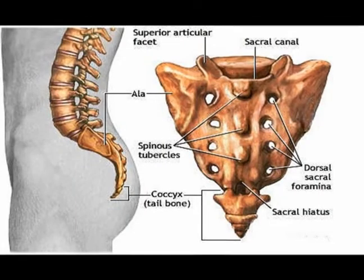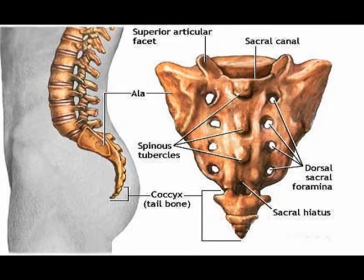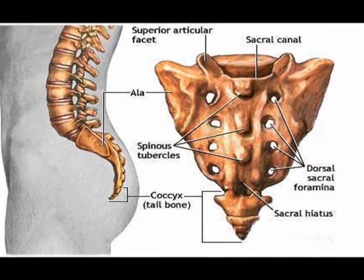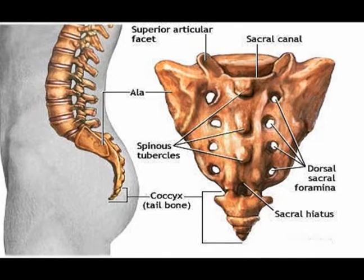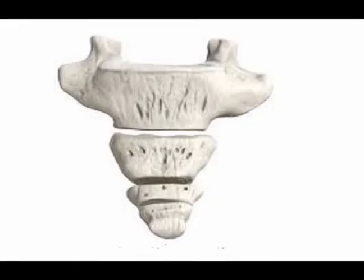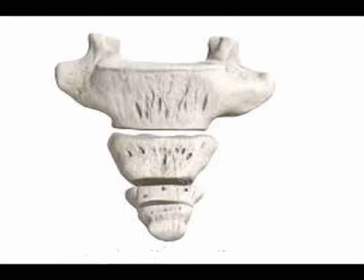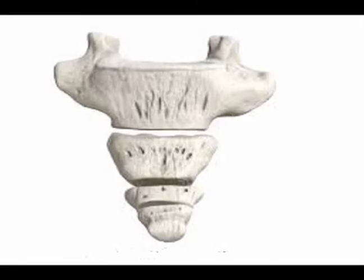The coccyx articulates with the sacrum through the sacral coccygeal joint. The sacral coccygeal joint and the intra coccygeal joints allow for a modest amount of coccygeal movement which is typically forward flexion while in a seated weight-bearing position.